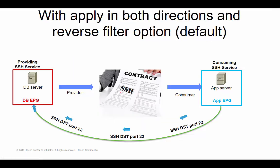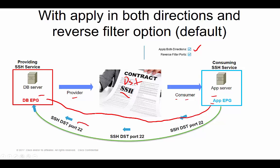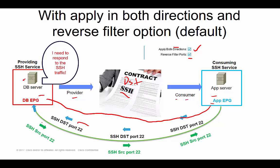With the SSH contract — DB EPG as provider, App EPG as consumer — leaving the default config on the subject allows for bi-directional communication. The contract has destination port 22, so the App EPG can send traffic to the DB EPG on port 22. But a device in the DB EPG needs to respond, and when it responds it will use source port 22. 'Apply both directions' applies the filter in both directions, and 'reverse filter ports' allows the provider to respond from the source port.